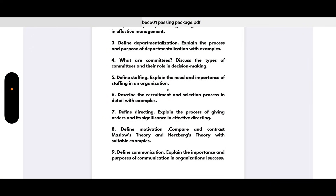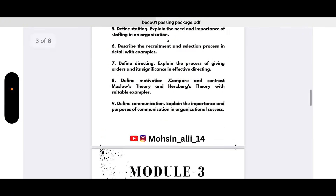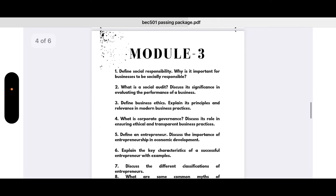Still in Module 2: Define staffing and explain the need and importance of staffing in an organization. Describe the recruitment and selection process in detail with examples. Define directing and explain the process of giving orders and its significance in effective directing. Define motivation and compare and contrast Maslow's theory and Herzberg's theory with suitable examples. Define communication and explain the importance and purposes of communication in organizational success.